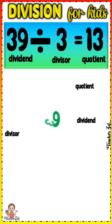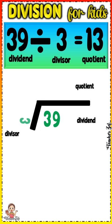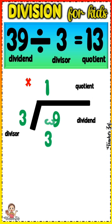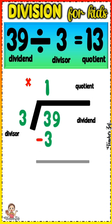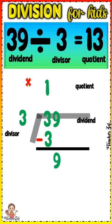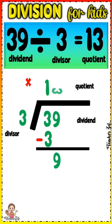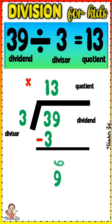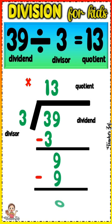3 times 3 equals 9. 3 minus 3 equals 0. Bring down 9. 9 divided by 3 equals 3. 3 times 3 equals 9. 9 minus 9 equals 0.